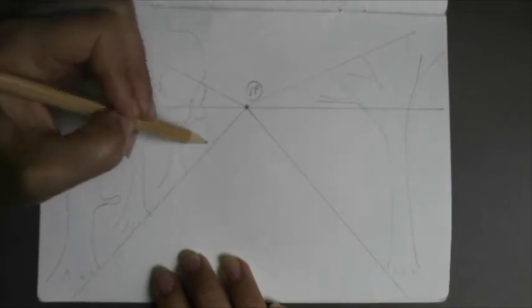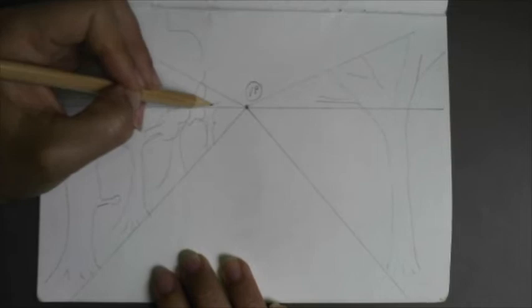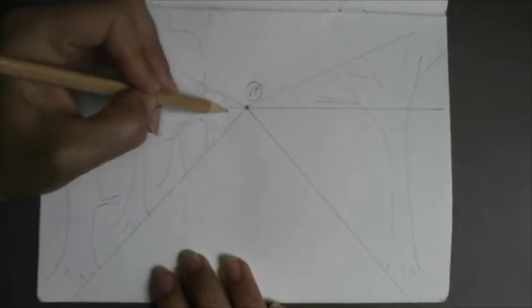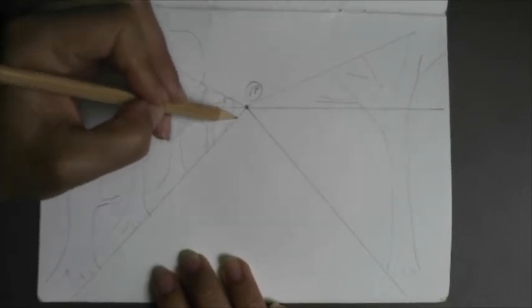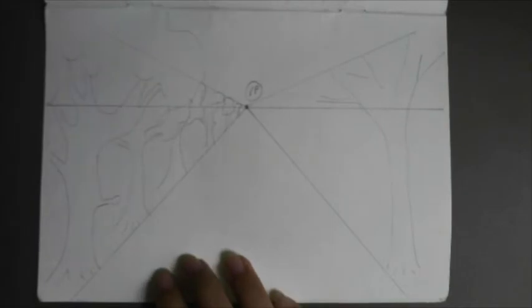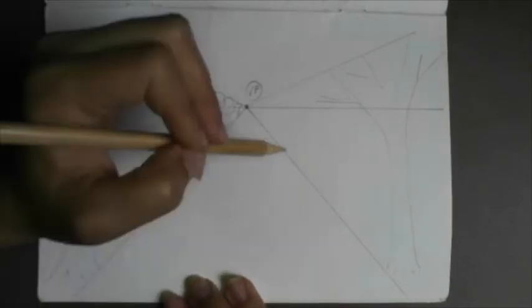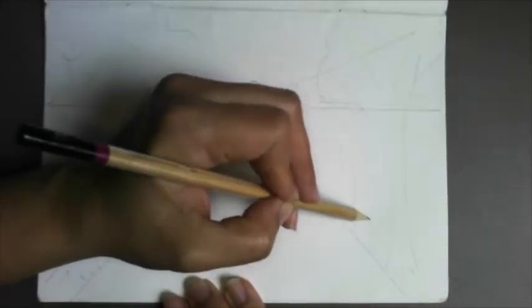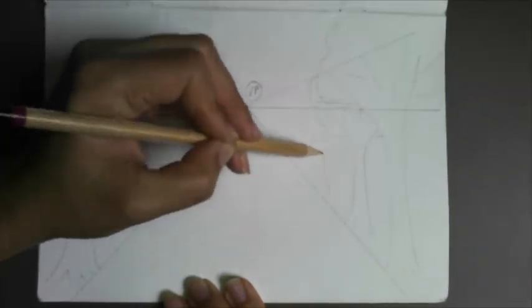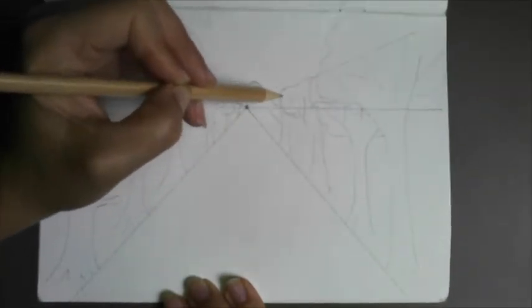I'm just drawing some trees along the path, just getting smaller and smaller. So as they go further away from you, you don't need to draw that much detail because when things are far away, you tend not to see them as well. Just do the other side as well.